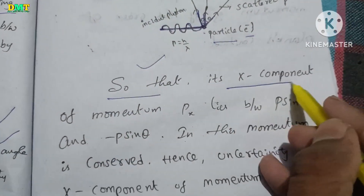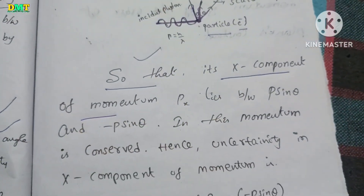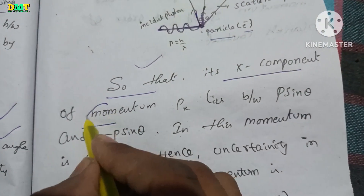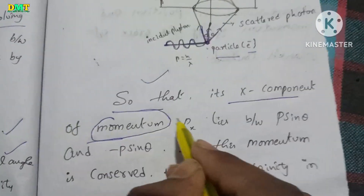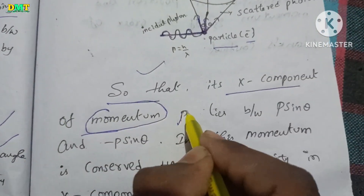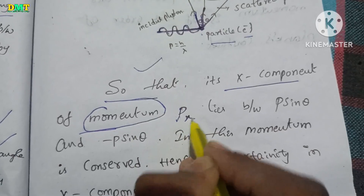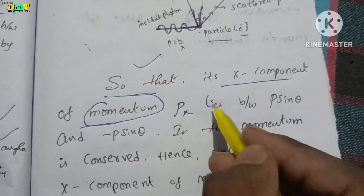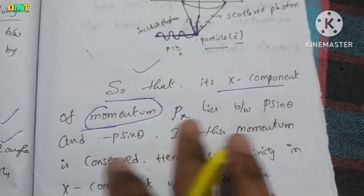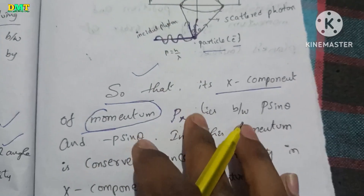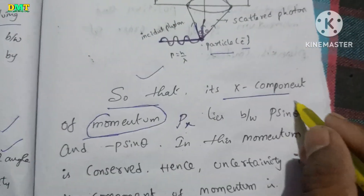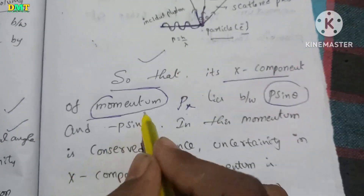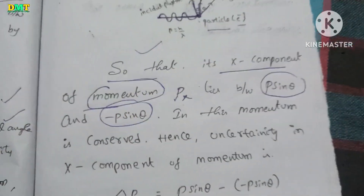So that gives us the x-component of momentum — Px. The x-component of momentum, Px, lies between a positive and a negative value. The positive term is P sin theta, and the negative term is minus P sin theta.